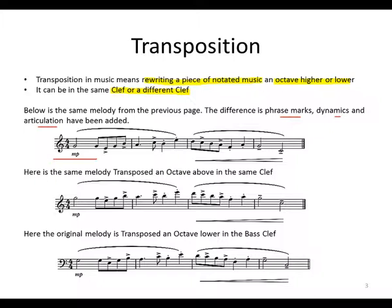Because we are transposing an octave higher in the same clef, we must find a G an octave higher — so that G is an octave higher from the first one. We can still use the same method of looking at the intervals: unison, then a third below, back to G, a third higher, and so on. That is transposing the melody an octave above in the same clef.